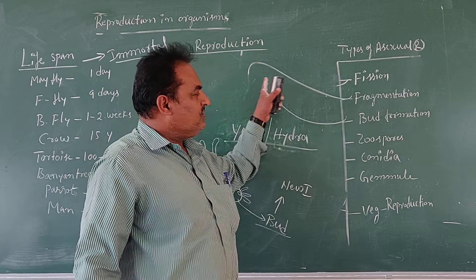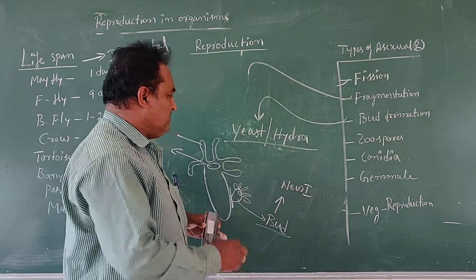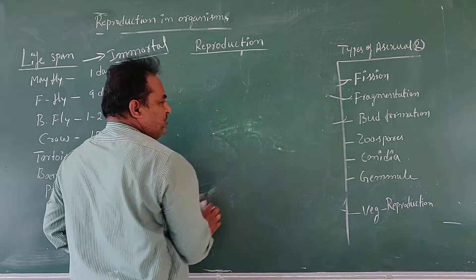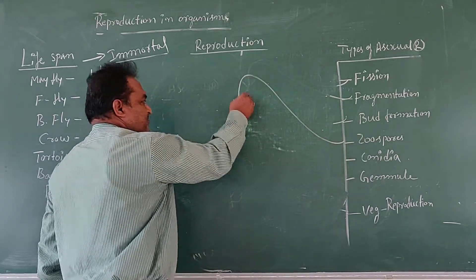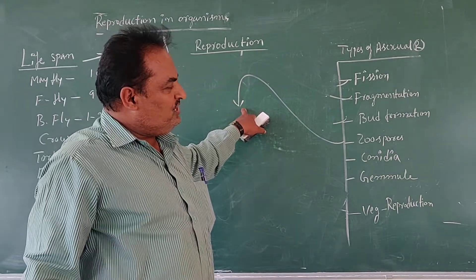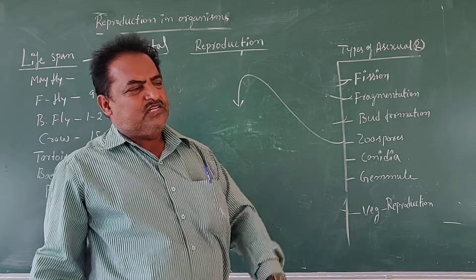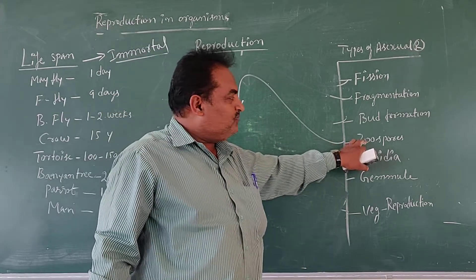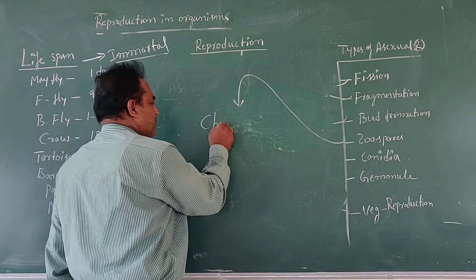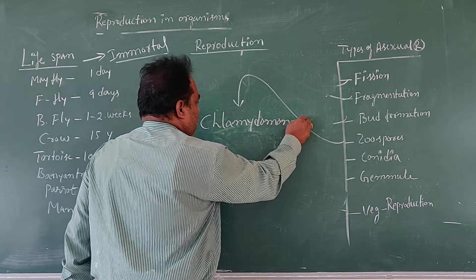For the process of fragmentation, the best example is Spirogyra and Nostoc. For binary fission, Amoeba is the best example. One more kind of asexual type of reproduction is zoospore formation. Zoospores are endogenously originated motile spores, which occur in the case of Chlamydomonas.